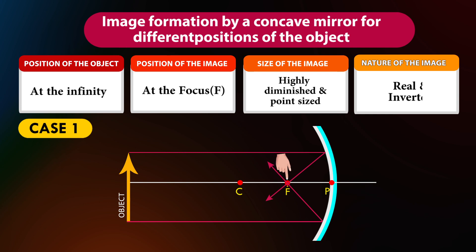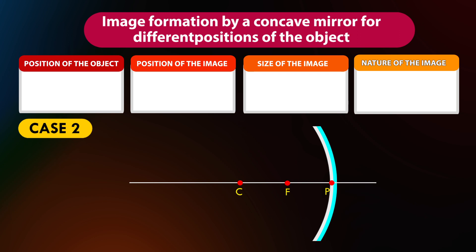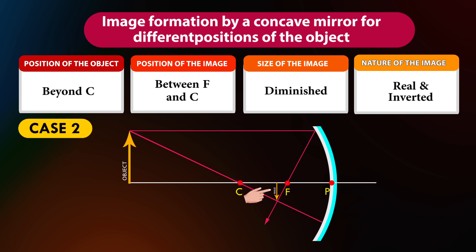The nature of the image is real and inverted. Case 2: If the position of the object is beyond C, the position of the image will be between F and C. The size of the image is diminished. The nature of the image is real and inverted.